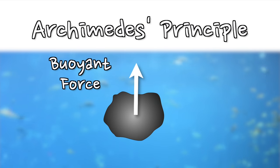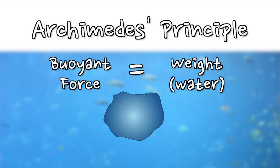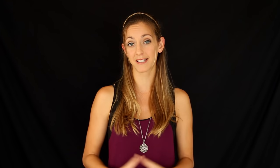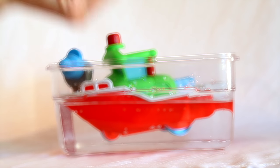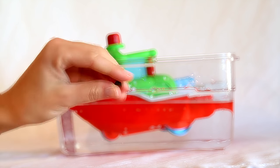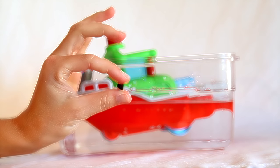At this point we could turn to Archimedes' principle, which states that the buoyant force on an object submerged in water is equal to the weight of the volume of water that object displaces. But that seems a little excessive. Another way to solve this problem is to consider an extreme case.